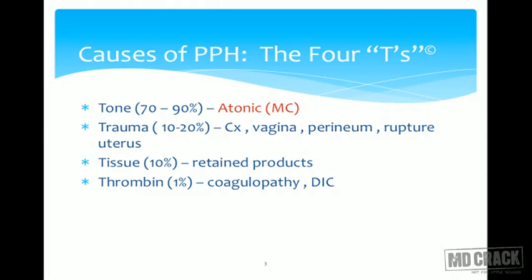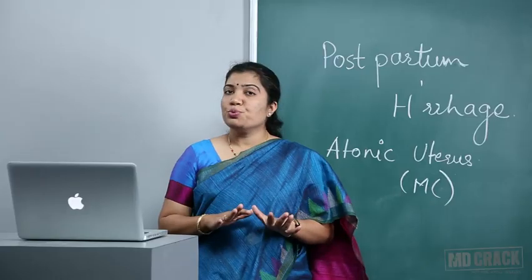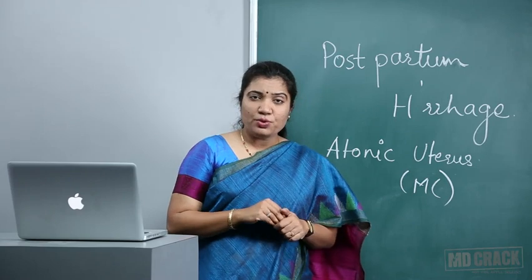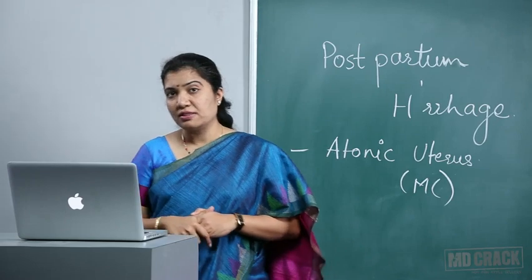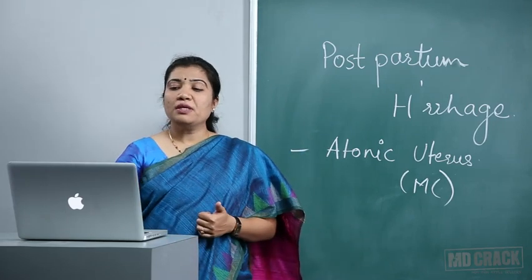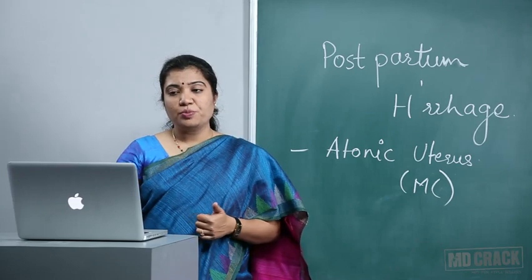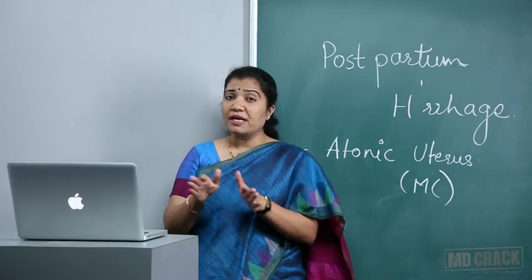The causes of PPH are remembered by the four T's: Tone, Trauma, Tissue, and Thrombin. Tone refers to uterine atony, which is the most common cause of PPH. Trauma can occur in 10 to 20 percent of cases involving the cervix, vagina, perineum, or rupture of uterus. Tissue refers to retained products in the uterine cavity leading to profuse bleeding. Thrombin refers to coagulopathy or DIC.